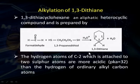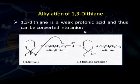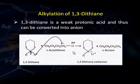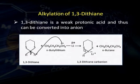The hydrogen atom at C2, which is attached to 2 sulfur atoms, is more acidic with a pKa value of 32, compared to hydrogens on ordinary alkyl carbon atoms. 1,3-Dithiane is a weak protonic acid and can be converted into a carbanion upon treatment with a base like n-butyllithium. The base removes this comparatively loosely attached hydrogen and generates a carbanion, which is stabilized by the 2 sulfur atoms that can accommodate the negative charge.